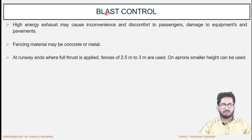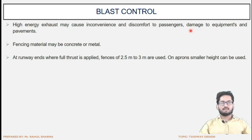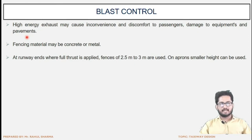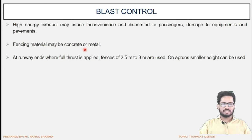The next topic is jet blast control — the hot exhaust air being expelled from the aircraft and the preventive measures to ensure that the exhaust does not affect various elements at the aircraft site. High-energy exhaust may cause inconvenience and discomfort to passengers moving at the site. It may also cause damage to equipment and even to the pavement, because the pavement can only sustain temperatures up to a certain limit. So we have to direct this hot exhaust gas away to the atmosphere, and fencing material of concrete or metal is used.